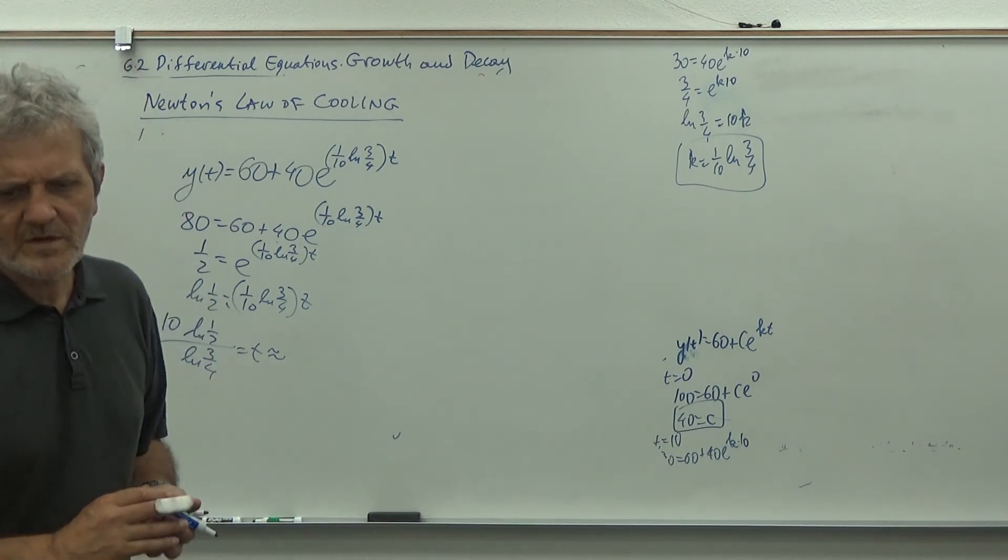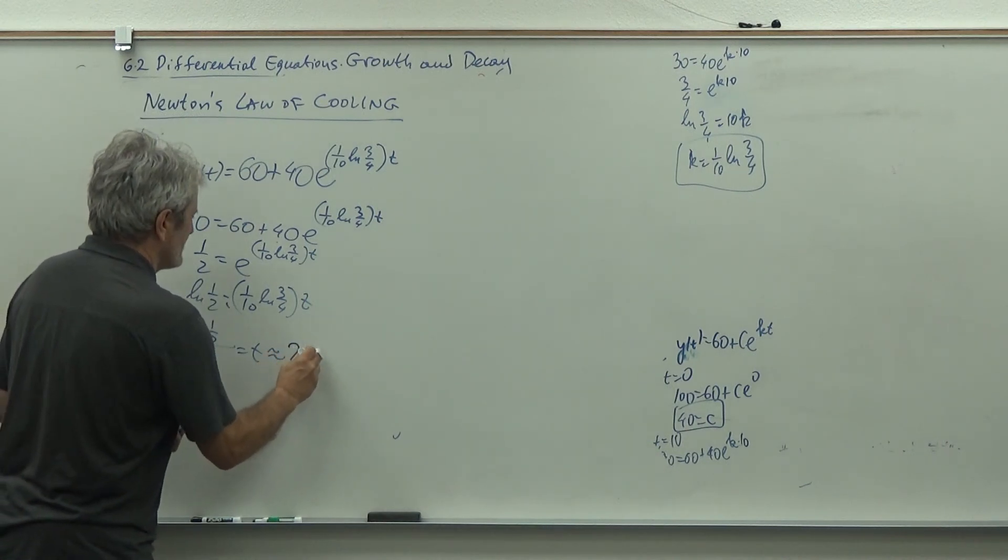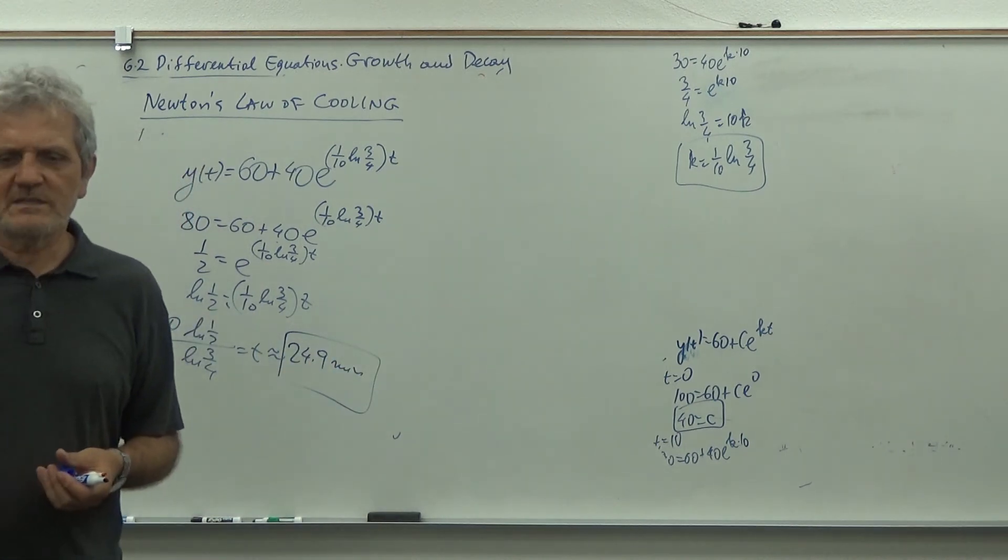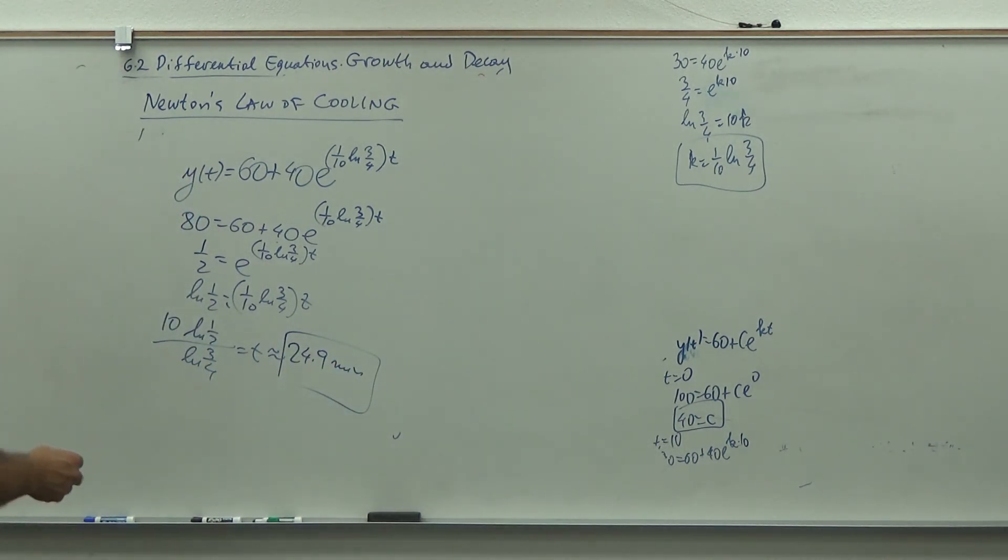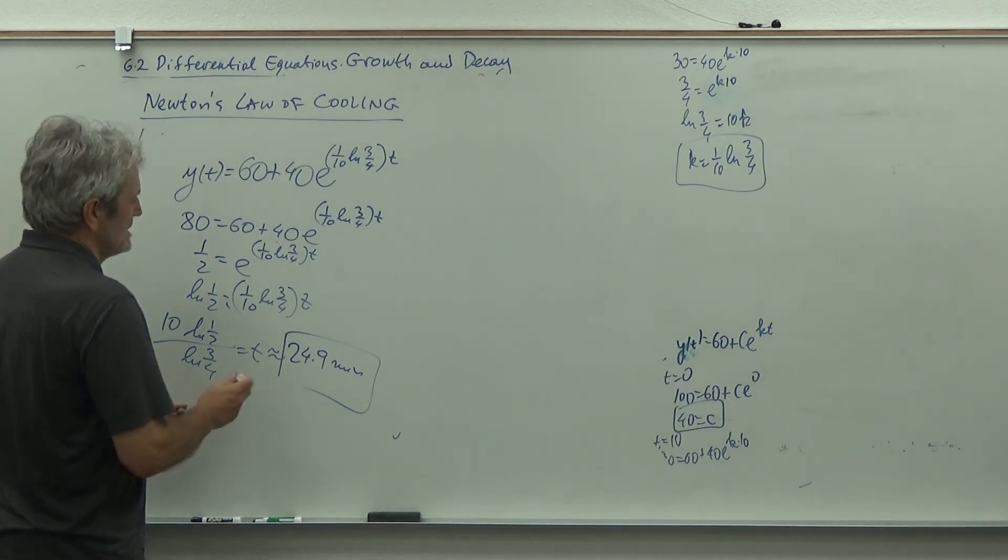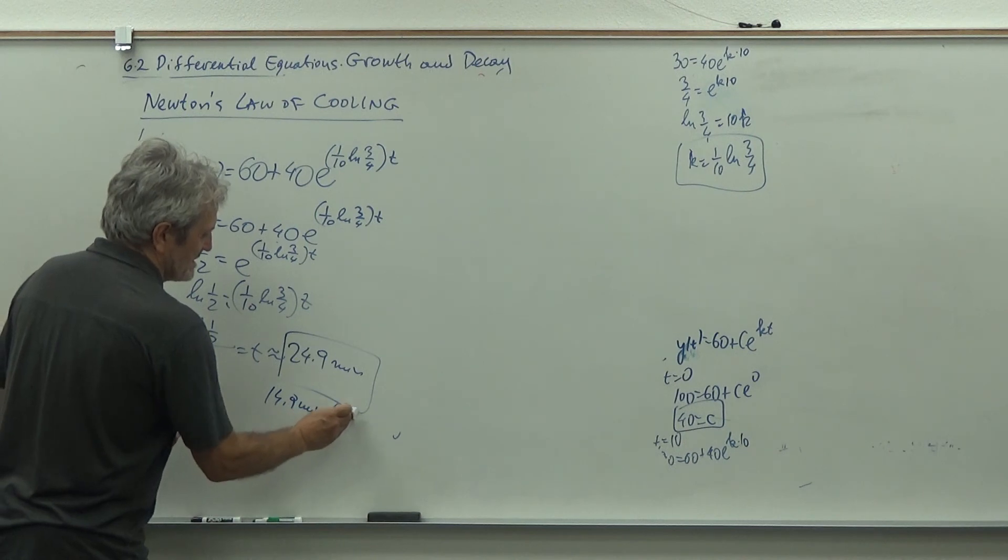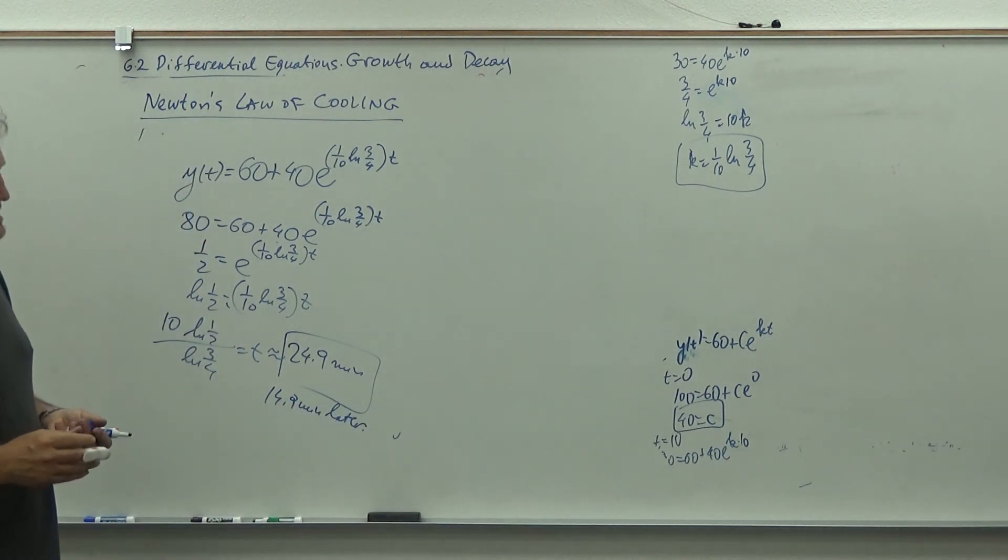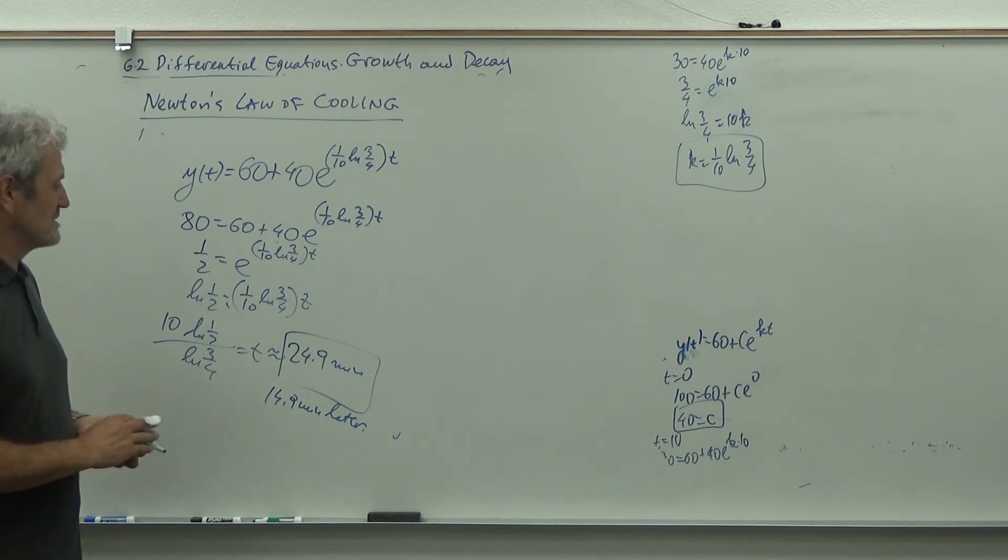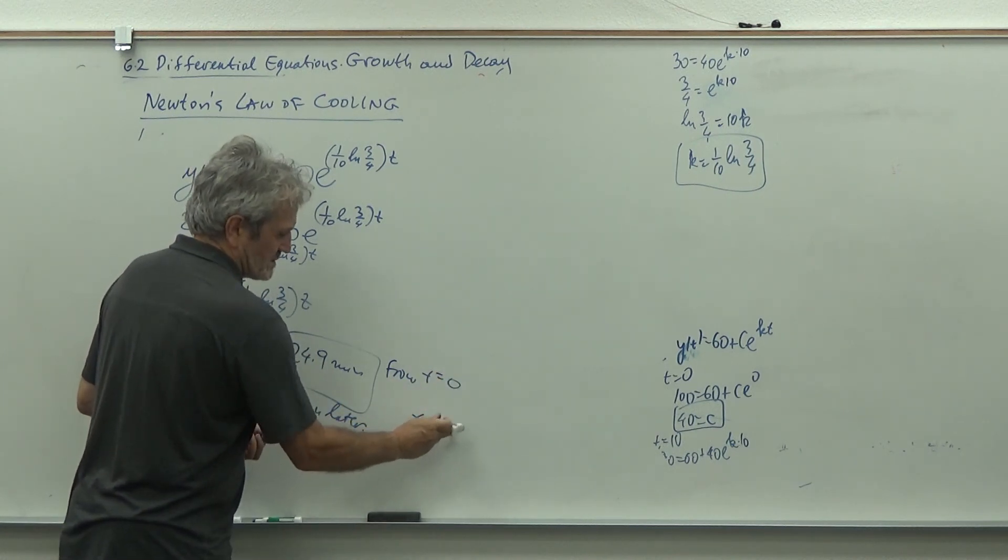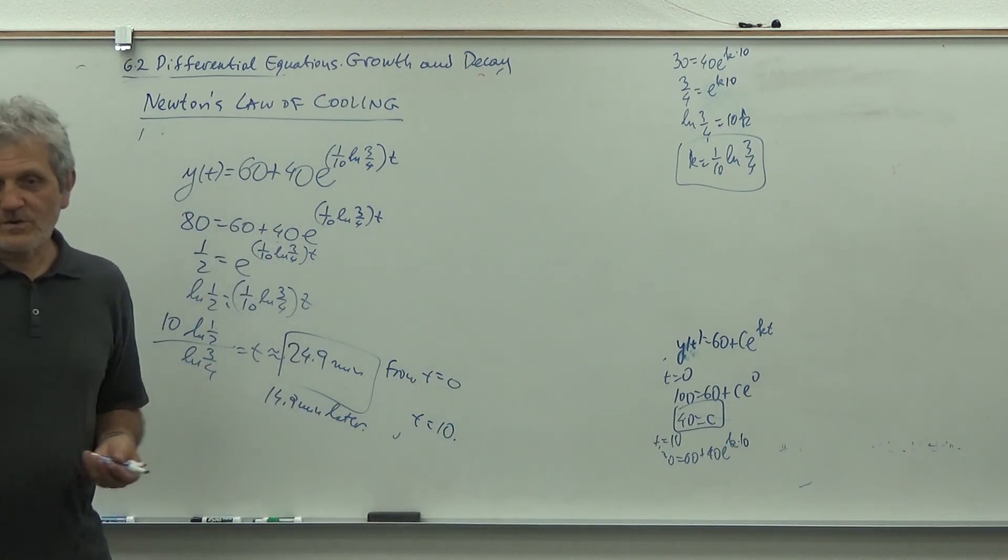Now I take ln of both sides: ln of one half will be one tenth ln 3 quarters times t. Now I solve for t: ln one half times 10 over ln 3 quarters is t, and that's approximately 24.9. So the answer is 24.9 minutes from the beginning, or 14.9 minutes later, depending on whether you express it with respect to when you already measured 90 or from the beginning of time.